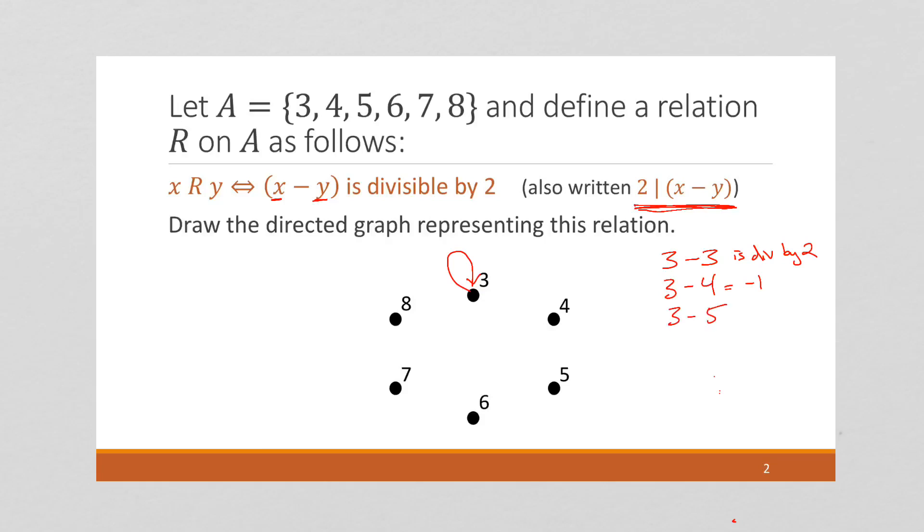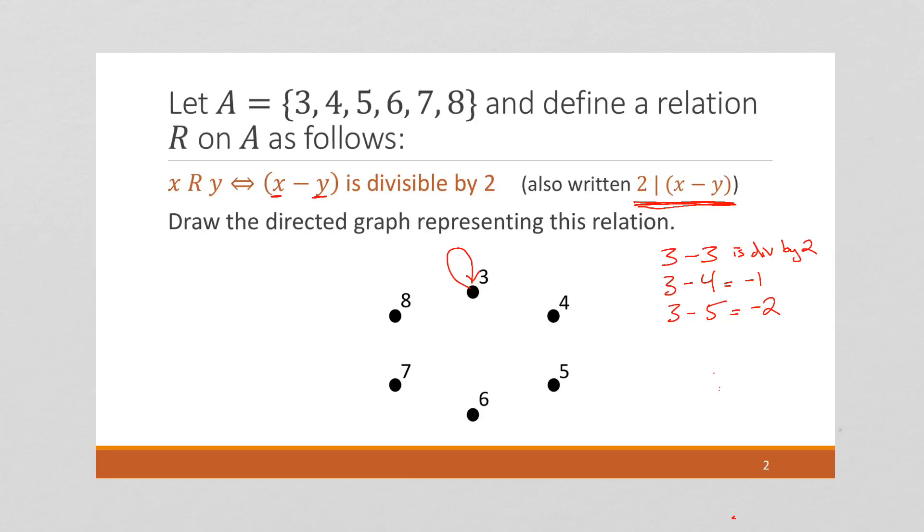3 minus 5 is going to be negative 2, which is divisible by 2, because this is equal to negative 1 times 2, and negative 1 is an integer, so we have an arrow from 3 to 5.